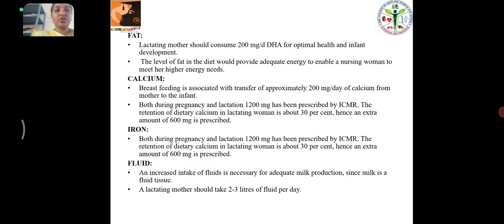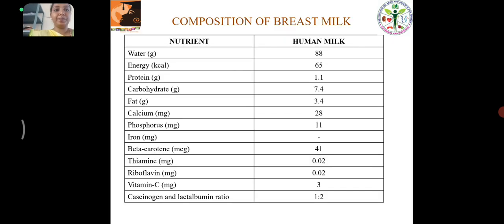Calcium: Lactation is associated with transfer of approximately 200 mg per day of calcium from mother to infant. Iron: During pregnancy and lactation, 1200 mg has been prescribed by ICMR. Fluid: A lactating mother should take 2-3 liters of fluid per day. Composition of Breast Milk per 100 ml: Water 88 g, Energy 65 kcal, Protein 1.1 g, Carbohydrate 7.4 g, Fat 3.4 g, Calcium 28 mg, Phosphorus 11 mg, Beta-carotene 41 mcg, Thiamine 0.02 mg, Riboflavin 0.02 mg, Vitamin C 3 mg.